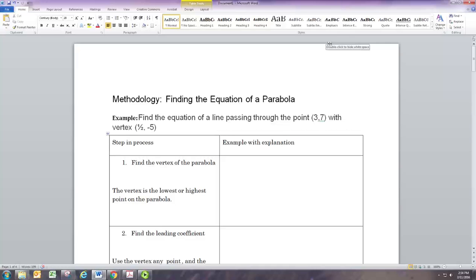In the first example we know a point on the parabola and a vertex. So the first step in the process is to find the vertex. If that's given to you, then you've already done the first step.